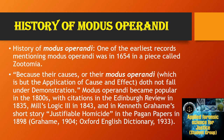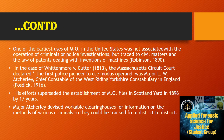Coming to the history of Modus Operandi. One of the earliest records mentioning Modus Operandi was in 1654 in a piece called Zotomia, noting that their causes or their Modus Operandi do not fall under demonstration. Modus Operandi became popular in the 1800s with citations in the Edinburgh Review in 1835, Mill's Logic III in 1843, and in Kenneth Grahame's short story Justifiable Homicide in the Pagan Papers in 1898. One of the earliest uses in the United States was traced to civil matters and the law of patents dealing with inventions of machines.